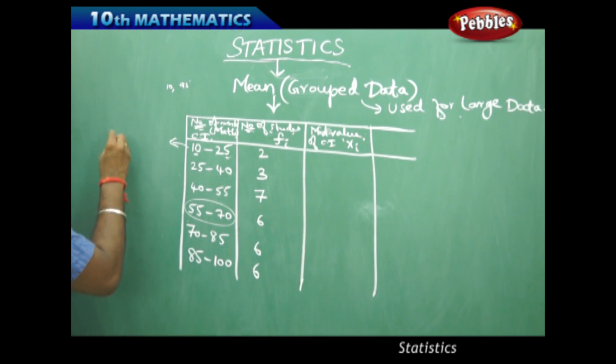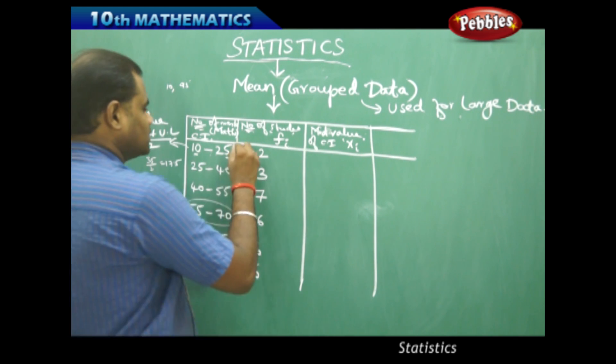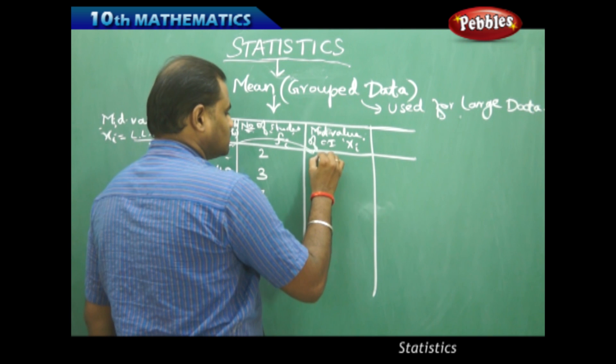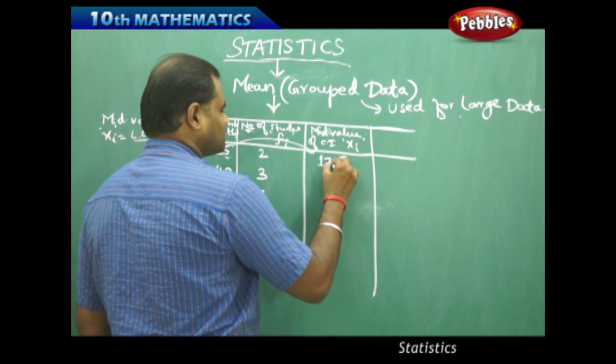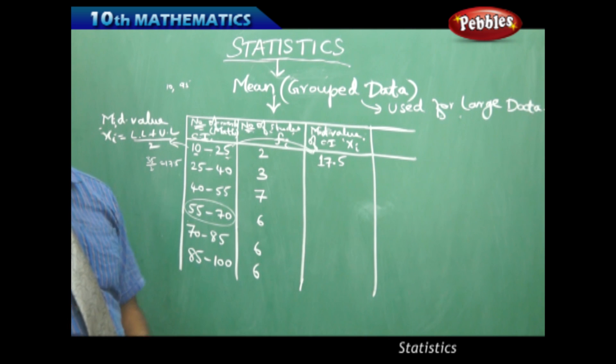So to find the mid value xi we have the formula: mid value xi is given to be lower limit plus upper limit by 2 for that particular class interval. So lower limit plus upper limit by 2 in this case being 10 plus 25 by 2, that is 35 by 2 which is 17.5. Therefore the mid value of this class interval is given to be 17.5 is what we get as the mid value for this.